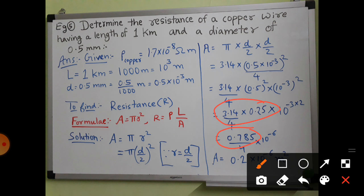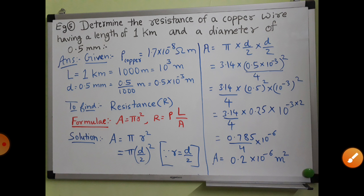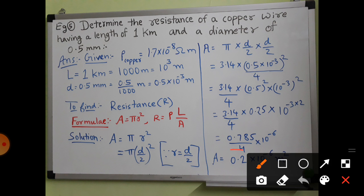For the calculation part, a calculator is allowed so you can use one. Now 0.785 divided by 4 equals approximately 0.196. If a digit after the decimal is more than 5, you can round it off to the next higher digit.